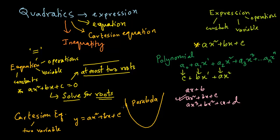There is a connection between the solving equation and the Cartesian equation. Since the quadratic equation has at most two roots, the Cartesian equation — meaning the parabola — would cut the x-axis, the horizontal number line, at most at two points.